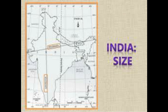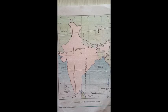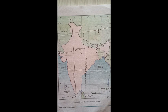India has a land boundary of about 15,200 kilometers, and the length of the coastline of the mainland including the Andaman and Nicobar Islands is 7,516.6 kilometers. India, with the great Himalayas in the north, stretches southward and at the Tropic of Cancer tapers off into the Indian Ocean. The latitudinal and longitudinal extent of the mainland is about 30 degrees.